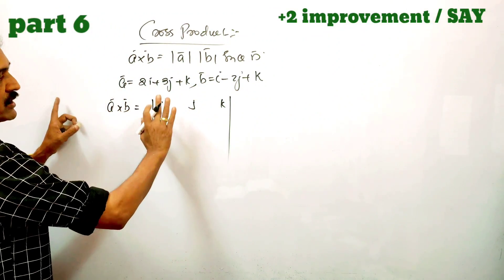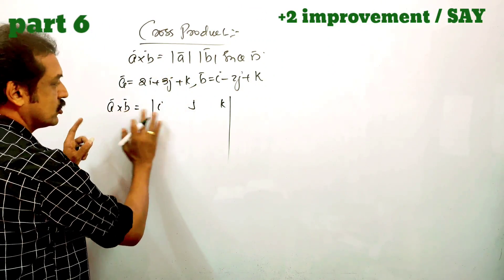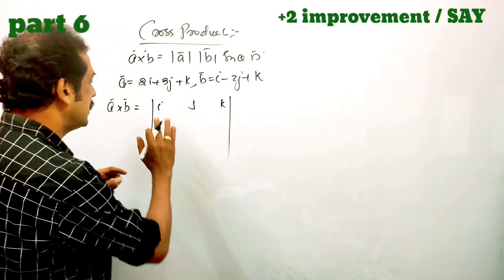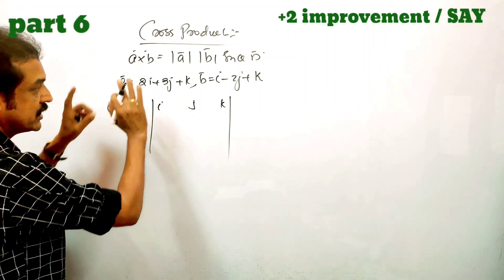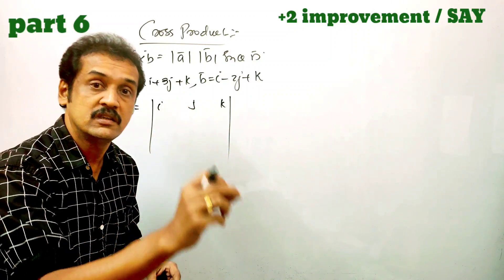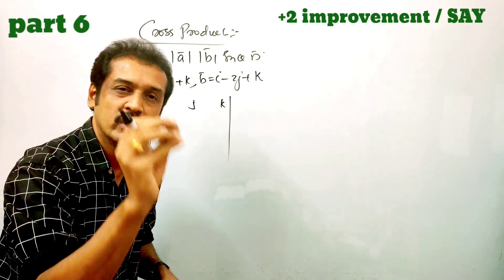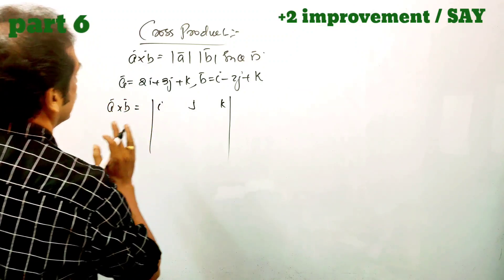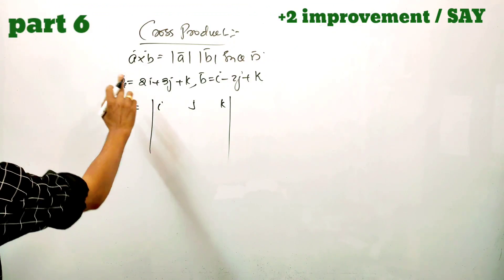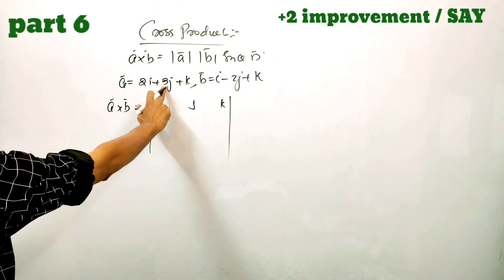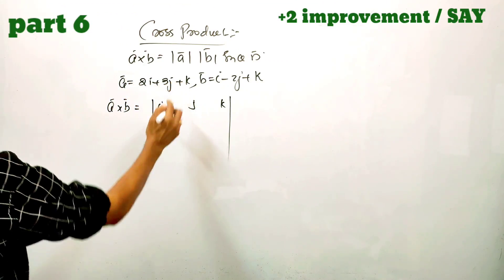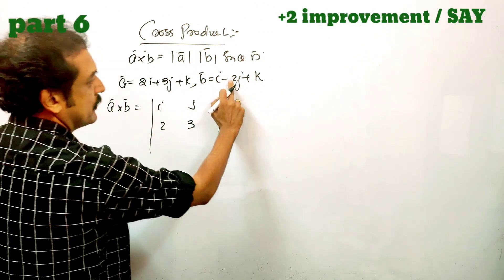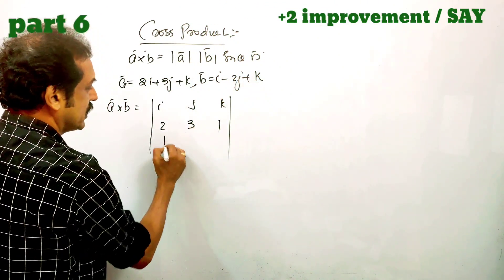Now, the first row is always i, j, k. The second row corresponds to the first vector: 2, 3, 1. The second row is 1, minus 2, 1.